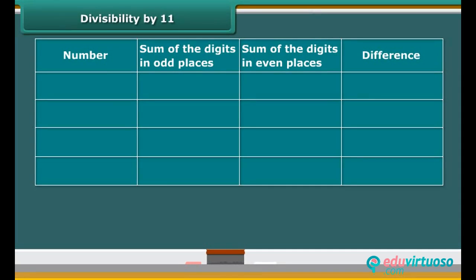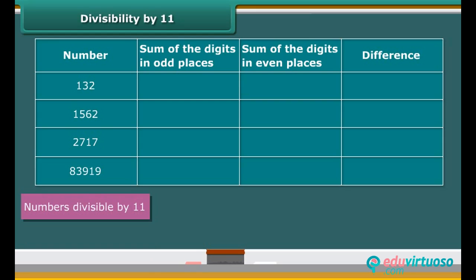Consider the numbers one hundred thirty-two, one thousand five hundred sixty-two, two thousand seven hundred seventeen, and eighty-three thousand nine hundred nineteen. All these numbers are divisible by eleven, as can be checked by direct division.